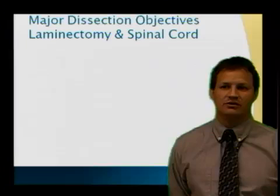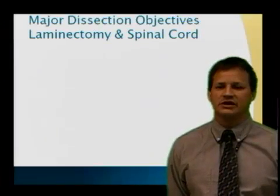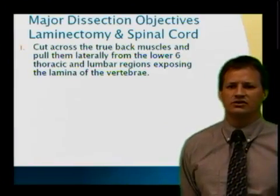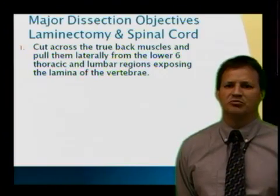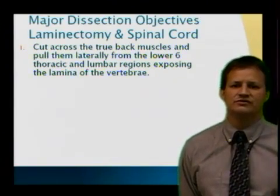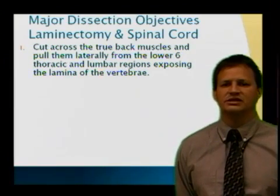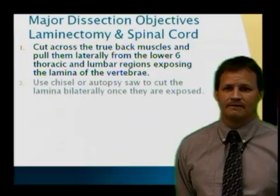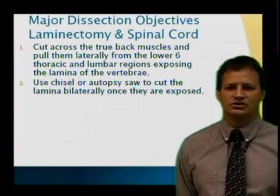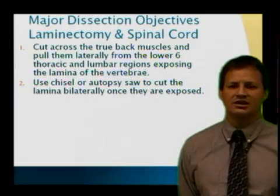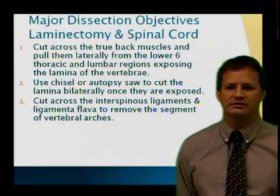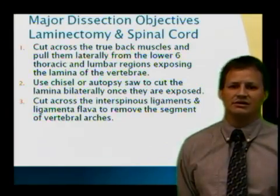Now for the major dissection objectives regarding the laminectomy to take a look at the spinal cord — it's a very interesting dissection. We'll start by cutting across all the true back muscles in the lower lumbar region, then pull them laterally from the lower six thoracic and lumbar regions to expose the lamina of each vertebra. Remember: if you don't know what it is, don't cut it. Then we'll use a chisel or autopsy saw to cut across the lamina bilaterally through those lower six thoracic and lumbar vertebrae, not getting into the sacrum. After cutting, we'll cut through the interspinous ligaments and ligamentum flava, then remove that segment to expose the vertebral canal.